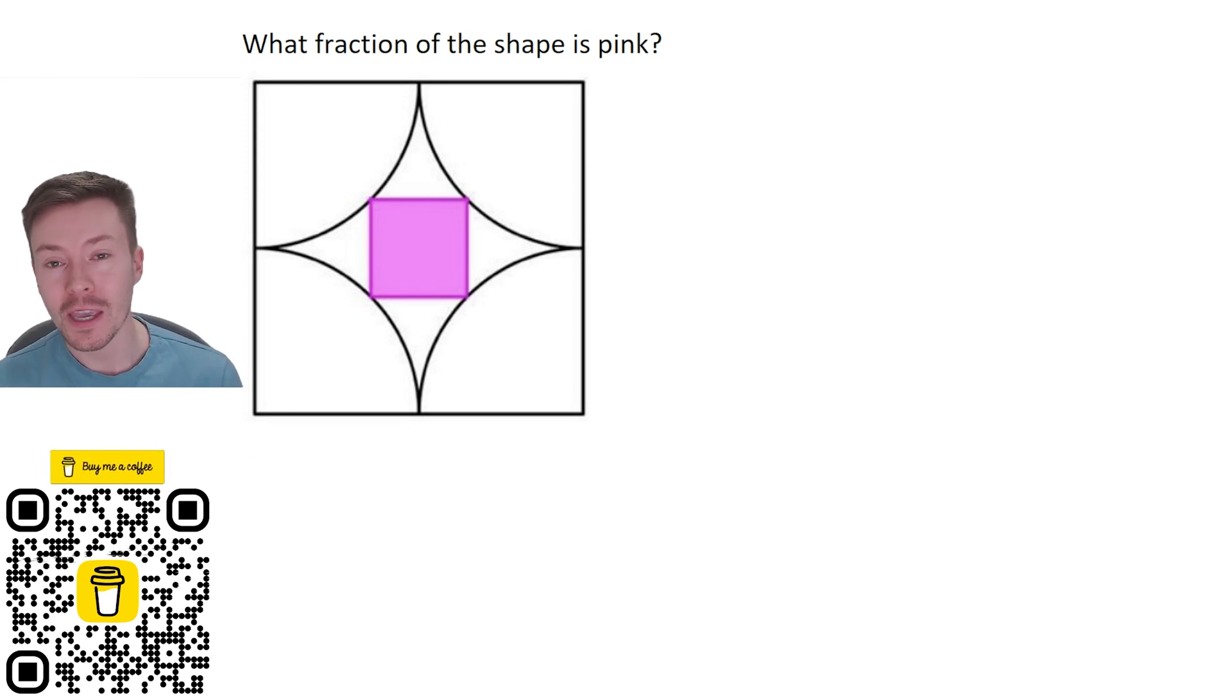In this scenario we've got four quarter circles inside of a square and we want to find the fraction of this inscribed square, this pink square, of the total shape. If you want to have a go at this yourself feel free to pause the video now and then restart it when you want me to go through it. I'm going to go through it now.